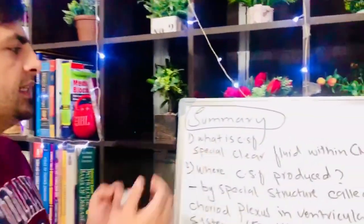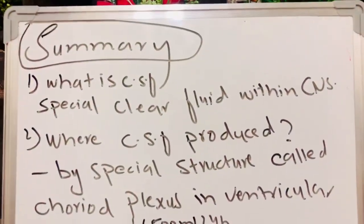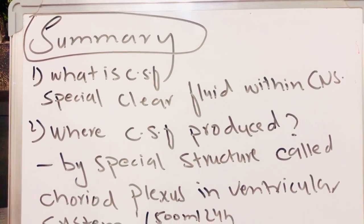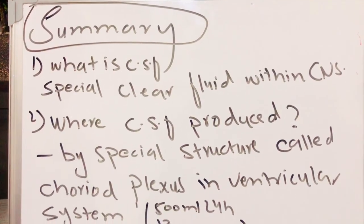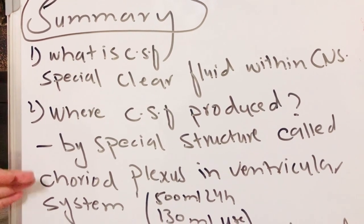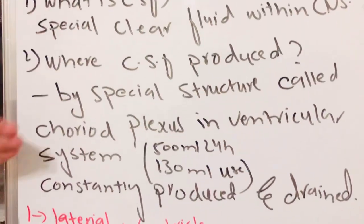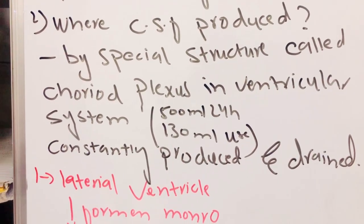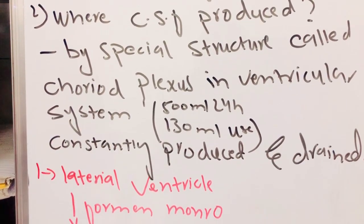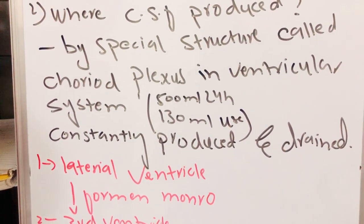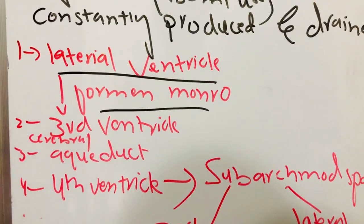Now we will summarize today's lecture. Cerebrospinal fluid is a special clear fluid within the central nervous system. It is produced by a special structure called the choroid plexus in the ventricular system. The amount of CSF produced in 24 hours is 500 ml, and the body uses around 130 ml daily. It is constantly being produced and drained.